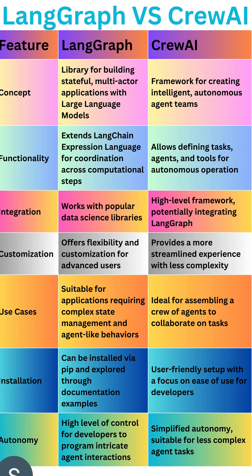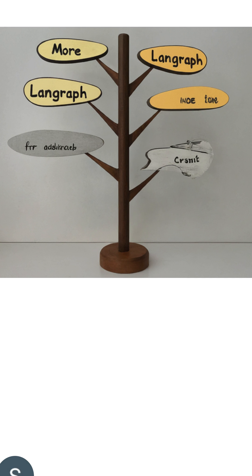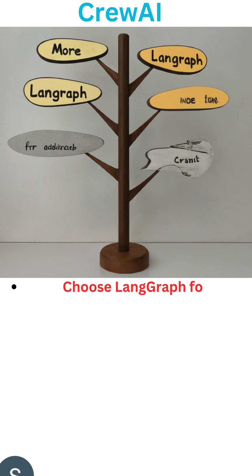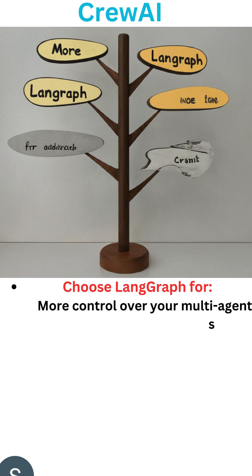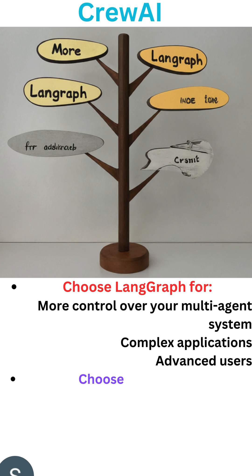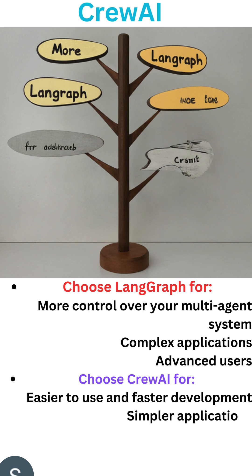On the other hand, CrewAI is a high-level framework for creating intelligent autonomous agent teams by defining tasks and agents — easy to learn and set up for less complex agent tasks. The best platform will depend on your specific needs and experience level. If you need control and flexibility, LangGraph is a good choice; if you want a faster and easier way to build a multi-agent system, CrewAI is the better option. Thank you for attending this session.